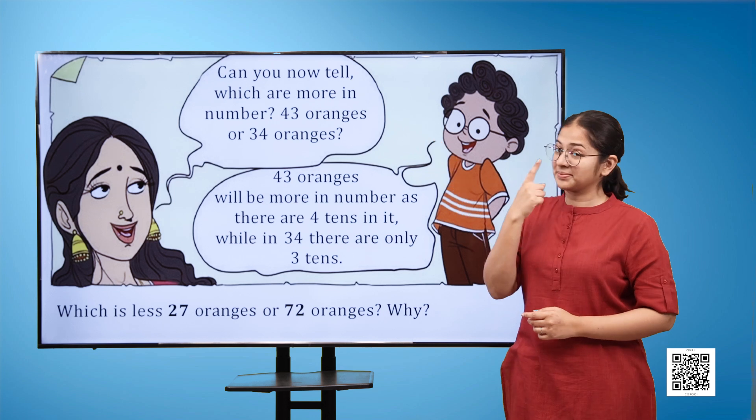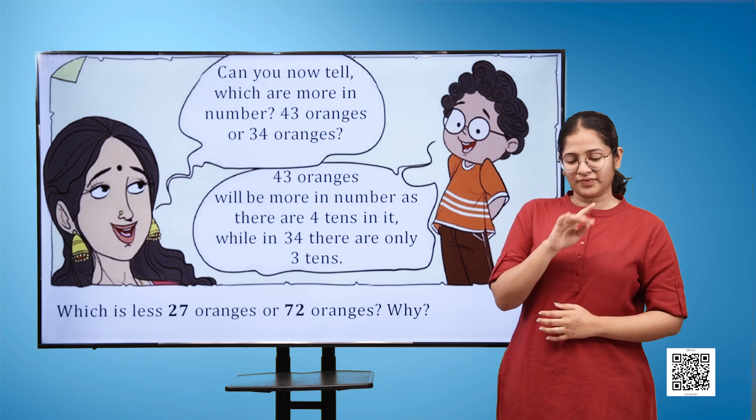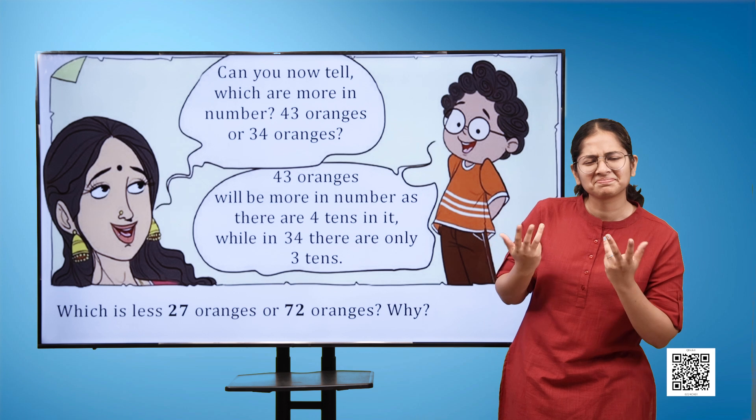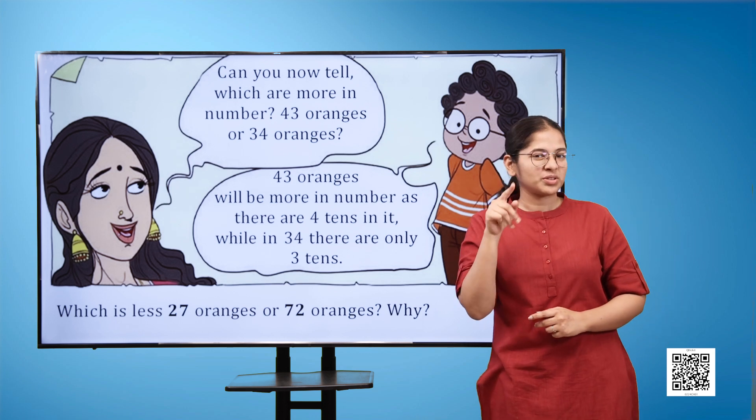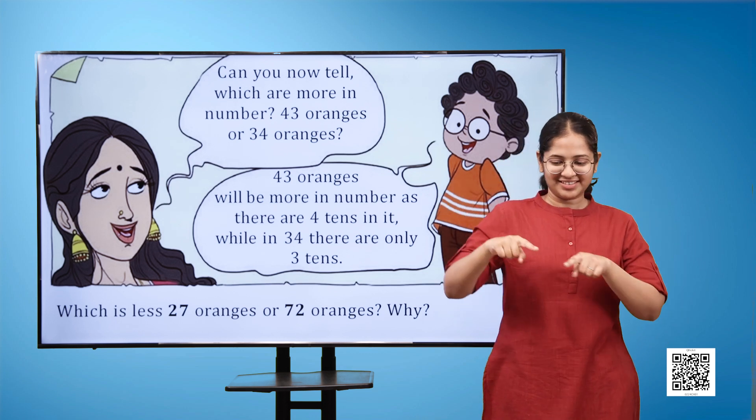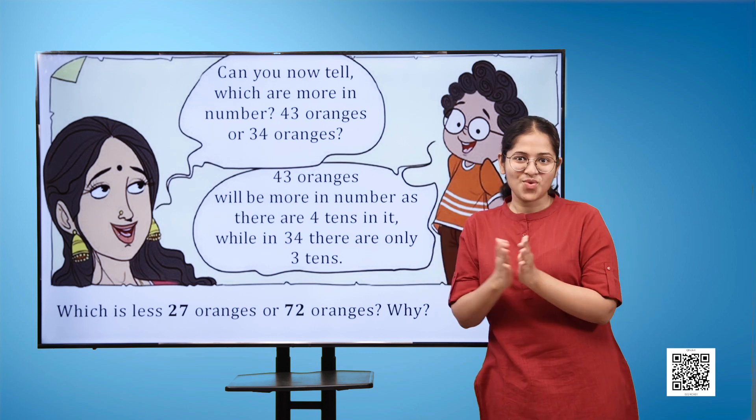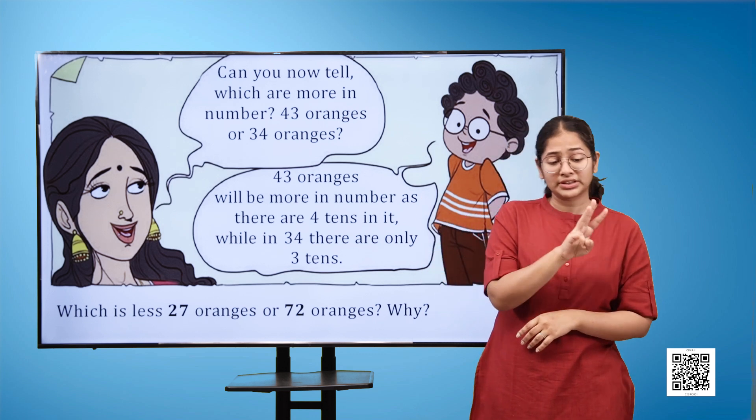In the next image, the lady says can you now tell which are more in number, 43 oranges or 34 oranges? The boy replies 43 oranges will be more in number as there are four tens in it, while in 34 there are only three tens.